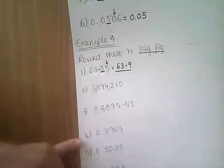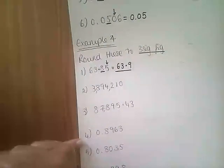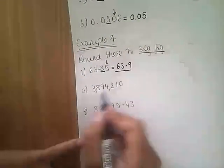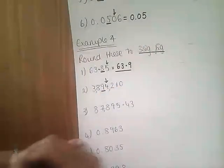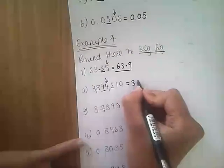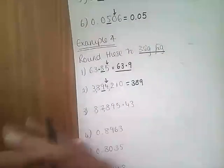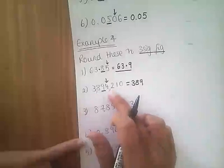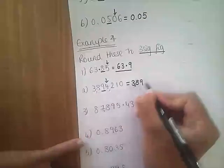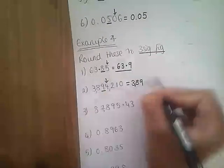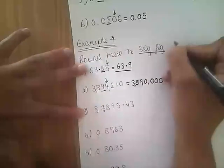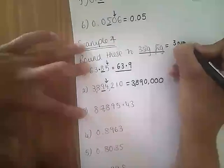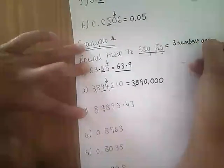Question number two: 3,894,210. Where is our third significant figure? First, second, third. Is the number next door five or more? No — so it stays as 389. But it can't just be 389 because that's nothing like this number. So we have to replace the remaining digits with zeros: 3,890,000. Three significant figures means three digits and the rest zeros.